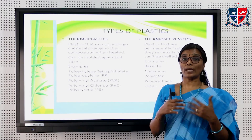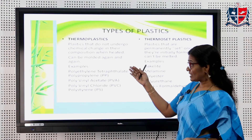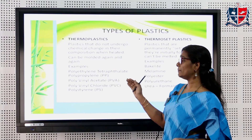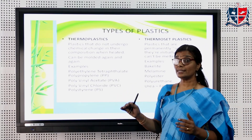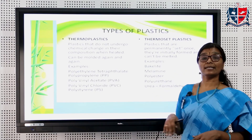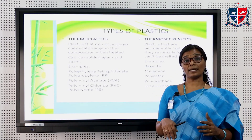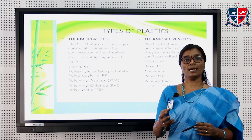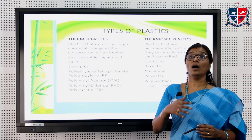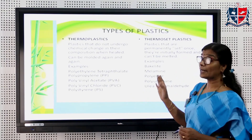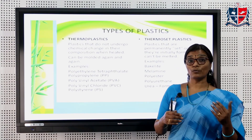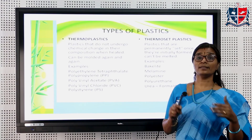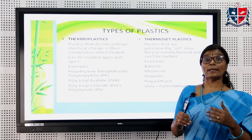Thermoplastics can be molded into any shape. Best examples of thermoplastics are polyethylene, polypropylene, polyvinyl chloride, polystyrene, etc. The other group is thermosetting plastics — when you heat a thermosetting plastic, it becomes a hard, infusible mass that cannot be recycled. Examples include phenol formaldehyde, melamine formaldehyde, and urea formaldehyde resins.